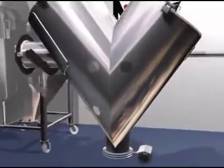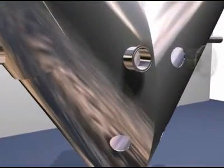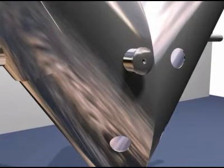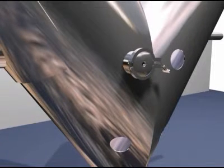This animation illustrates the use of sensors on a V-Blender, but any existing blending equipment, including double-cone blenders and bin-base systems, can be retrofitted with standard 2.5-inch tri-clamp fittings.